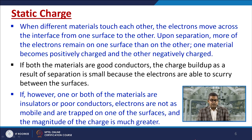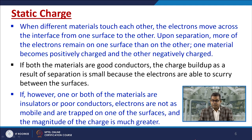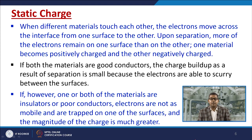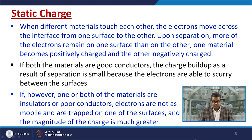When different materials touch each other, electrons move across the interface from one surface to the other. Upon separation, more electrons remain on one surface, so one material becomes positively charged and the other negatively charged. If both materials are good conductors, charge build-up is small because electrons can move freely between surfaces. If one or both materials are insulators or poor conductors, electrons are trapped and the magnitude of charge is much greater, producing higher-intensity sparks or arcs.